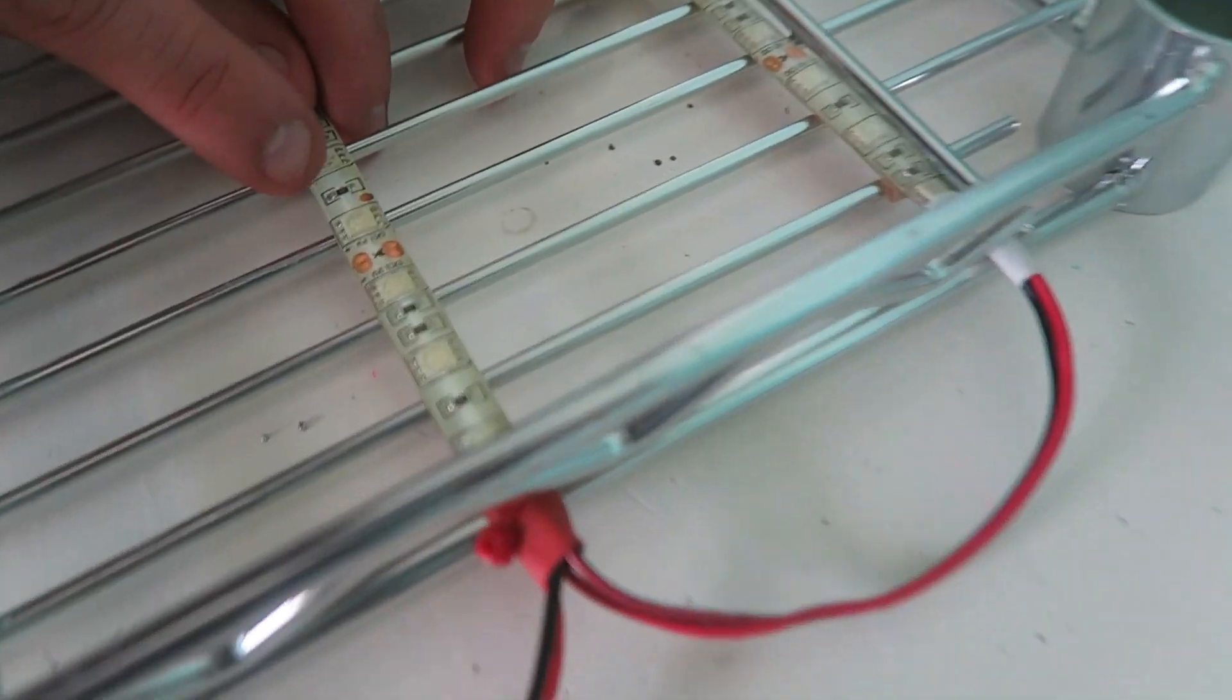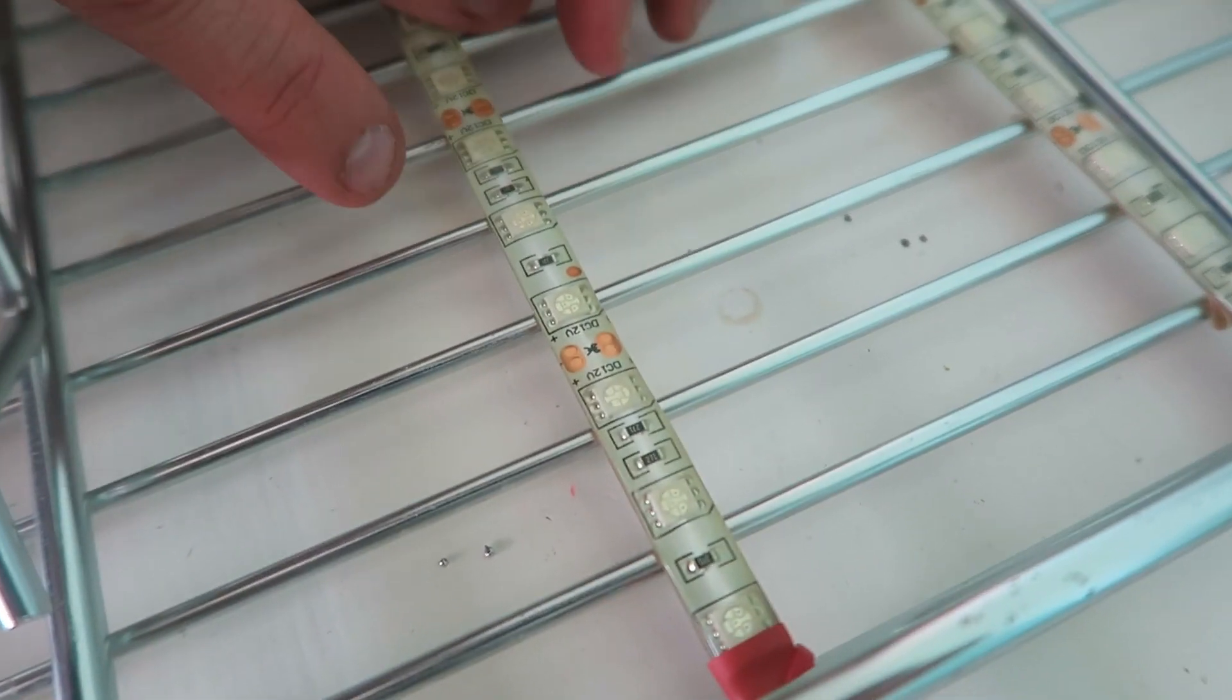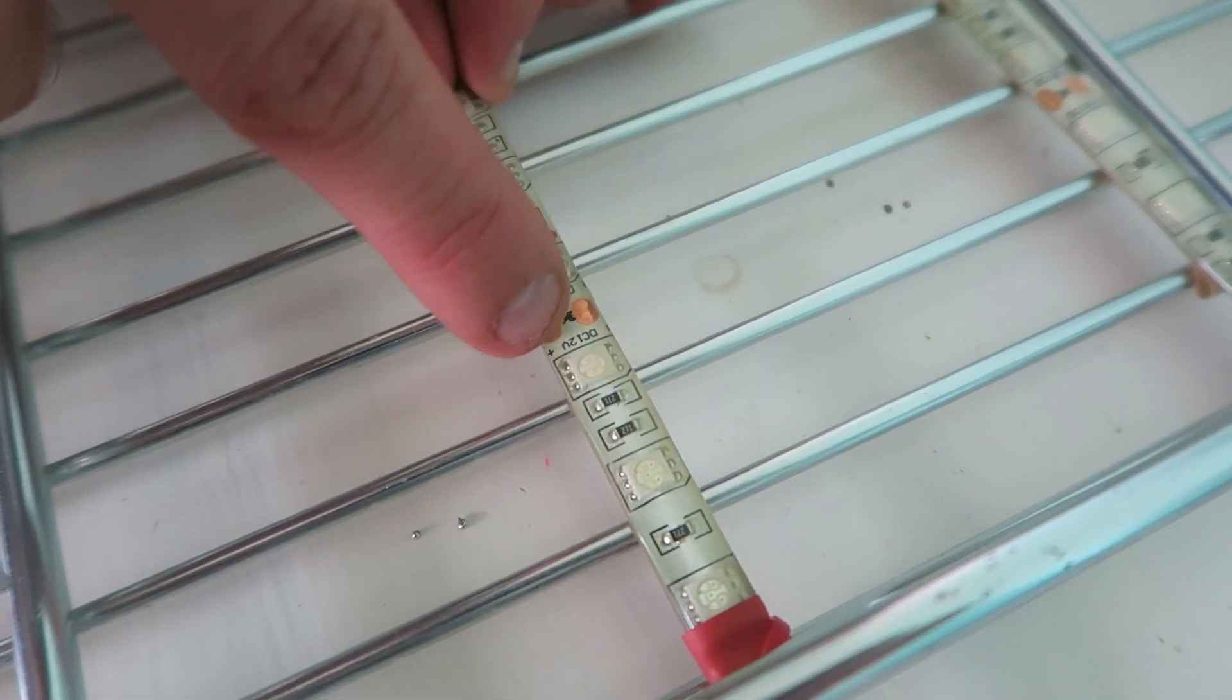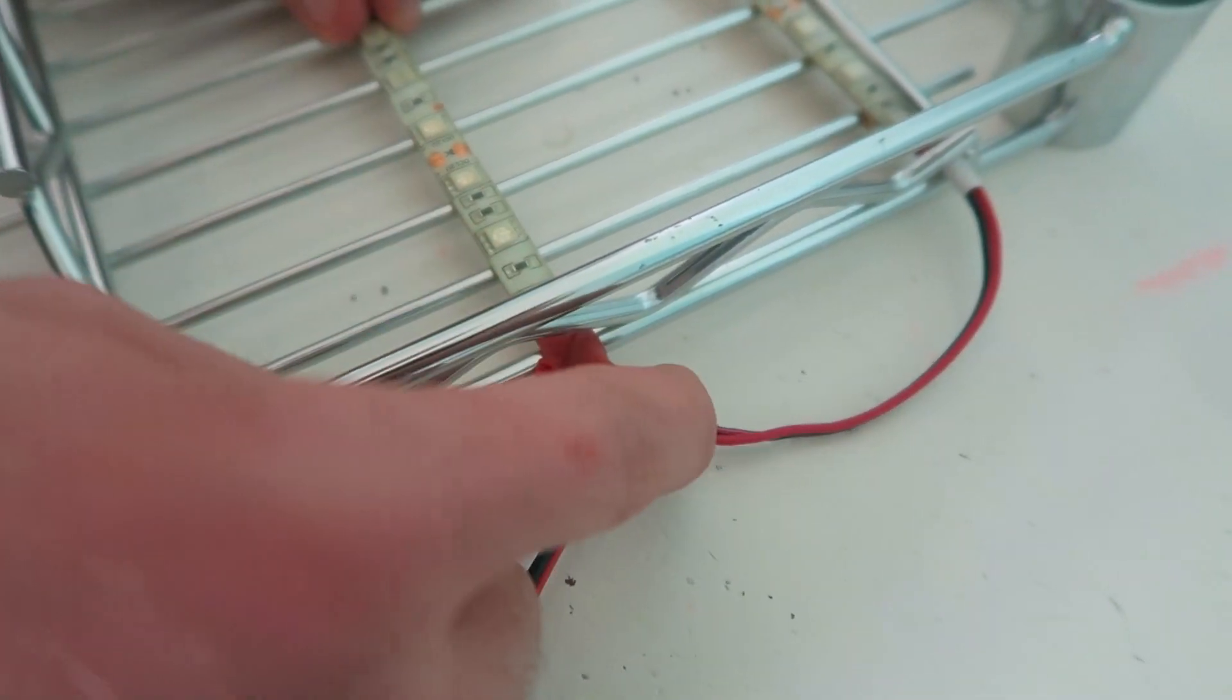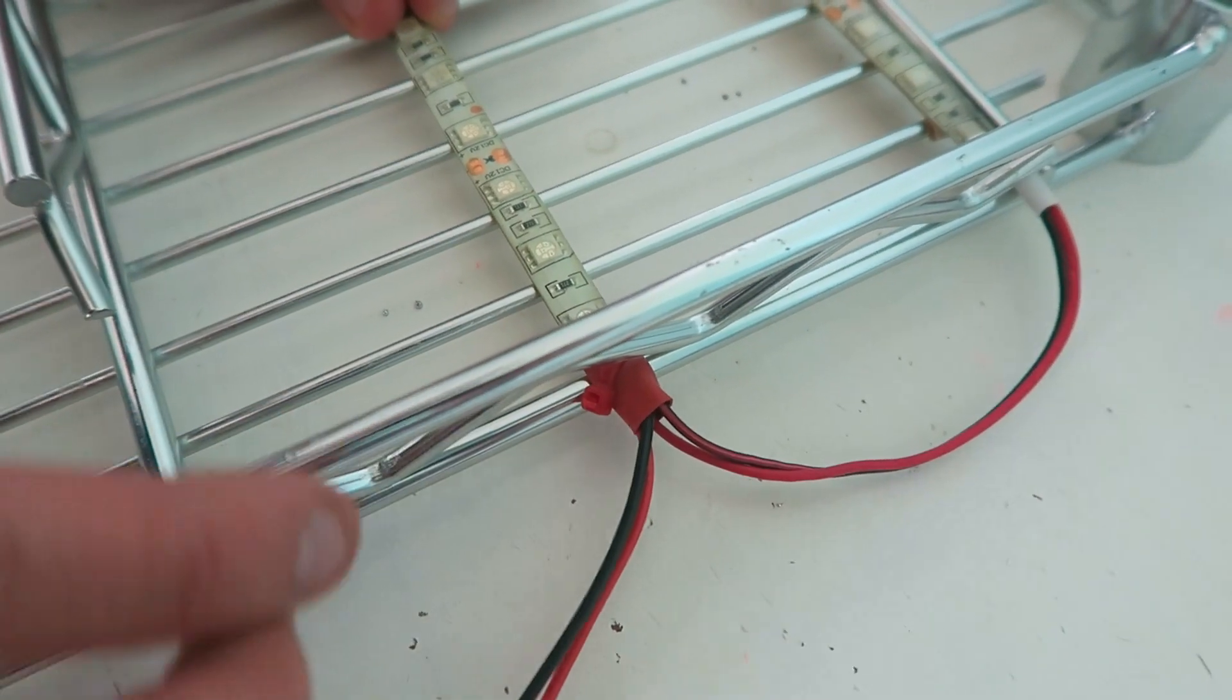So basically there's a plus. If you look closely, there's a plus and a minus. So there's a little plus and a little minus right there. So all you have to do is connect the red wire to the plus side and the black wire to the minus side and I just chain them together here.